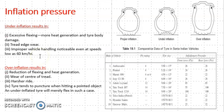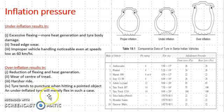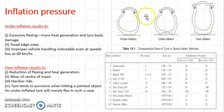Under-inflation results in damage, and over-inflation results in reduction of flexuring and heat generation. The wear of the centre tread is more, there is a harsher ride, and the tyre tends to puncture when hitting a pointed object. An under-inflated tyre will merely flex in each case. You can observe that with over-inflation, the tread contacts at the center; with under-inflation, it contacts at the edges; and proper inflation is needed. The pressure on both wheels must be as per the manufacturer's requirement — it is very important for long-term tyre life.